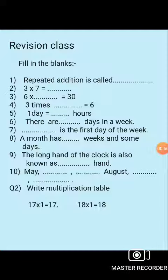3 threes are 6. 3 times dash is equal to 6. Kis number ko 3 times likhte hai? 3 repeated addition multiplication hota hai — 3 times kis number ko likhte hai? Woh answer hamara 6 aata hai.